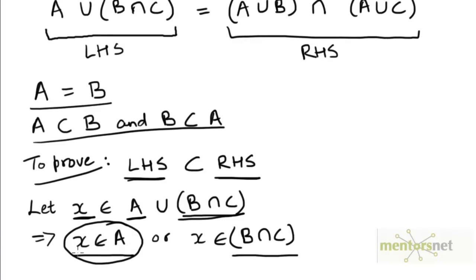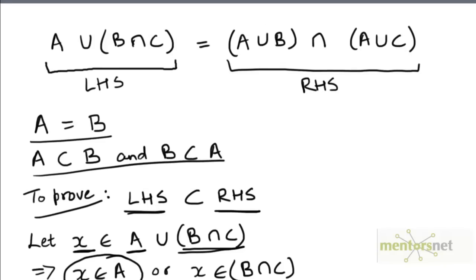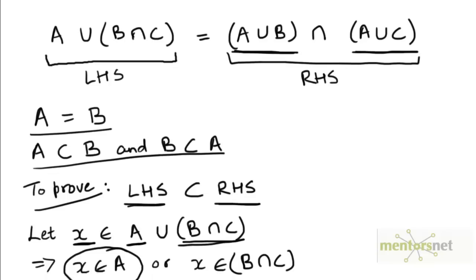x is an arbitrary element on the left hand side, and we have two cases: either x belongs to A or x belongs to B intersection C. In either case, we have to prove that x belongs to the set on the right hand side. In order to show that x belongs to this set, we have to prove it belongs to both sets on the right hand side, since the right hand side is an intersection. So we have to prove x belongs to A union B, and also that x belongs to A union C.